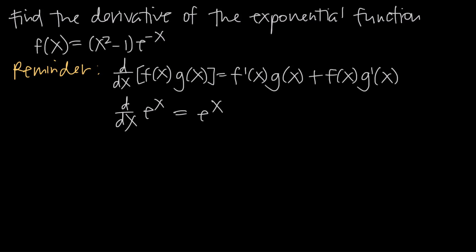In this video, we're talking about how to find the derivative of exponential functions. An exponential function is any function that involves e, and e to the x is the most basic exponential function there is. In this particular problem, we have e to the negative x, so we'll have to use chain rule to find the derivative. The function we're working with overall is f of x equal to the quantity x squared minus 1, multiplied by e to the negative x.